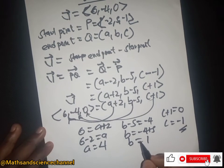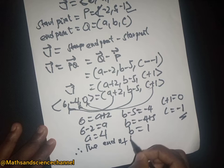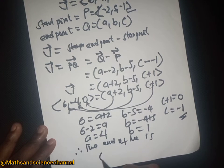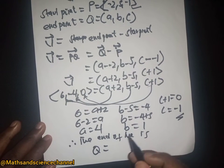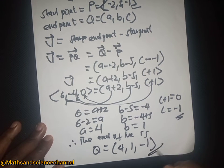So in this case c will be equal to -1. Therefore we can conclude that the end point of the vector is Q = (4, 1, -1).